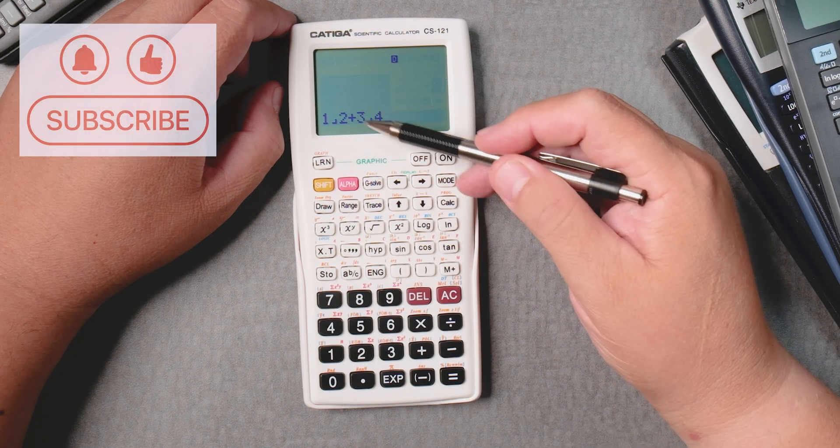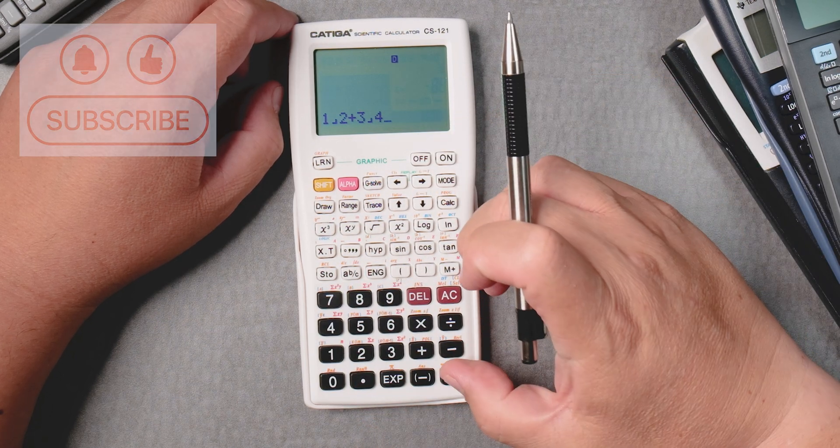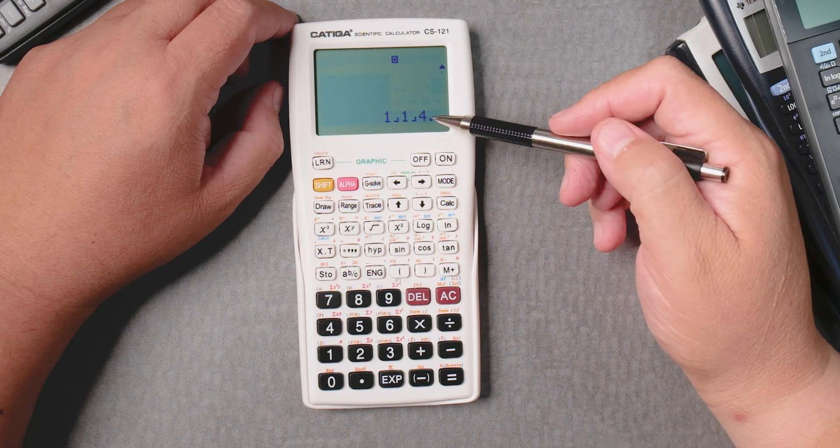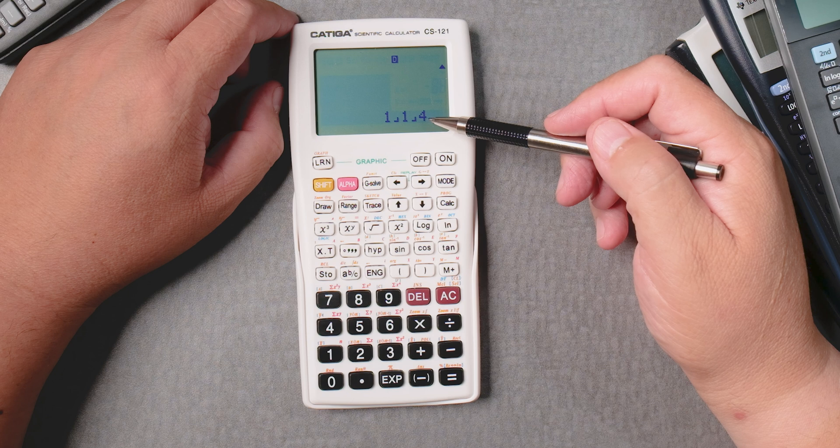The fractions are separated by a plus. It's smart enough. Equals 1 and 1/4. Let's say I want to change that into an improper fraction.